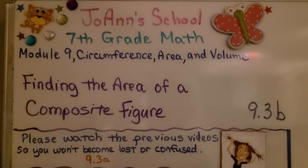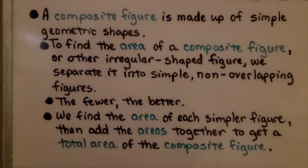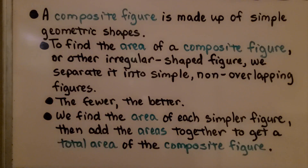Lesson 9.3b, Finding the Area of a Composite Figure. As we discussed in the last video, a composite figure is made up of simple geometric shapes. To find the area of a composite figure or other irregular shaped figure, we separate it into simple, non-overlapping figures — the fewer the better.